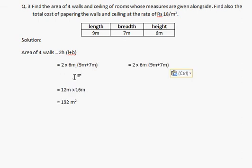Continuing the calculation: 2 times 6 meters times 16 meters gives us 192 square meters for the area of the walls. Now we move to the area of ceiling.